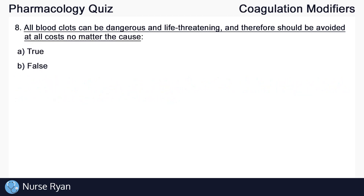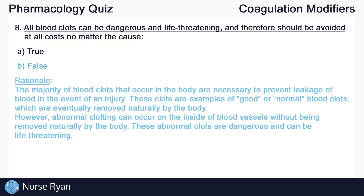Question number eight: All blood clots can be dangerous and life-threatening and therefore should be avoided at all costs no matter the cause. The answer is B, false. The majority of blood clots that occur in the body are actually necessary to prevent leakage of blood in the event of injury. These clots are examples of good or normal blood clots which are eventually removed naturally by the body. However, abnormal clotting can occur on the inside of blood vessels without being removed naturally, and these abnormal clots are dangerous and can be life-threatening.